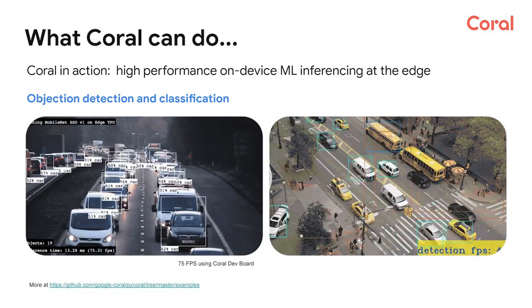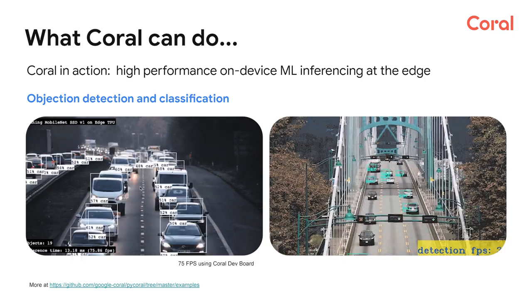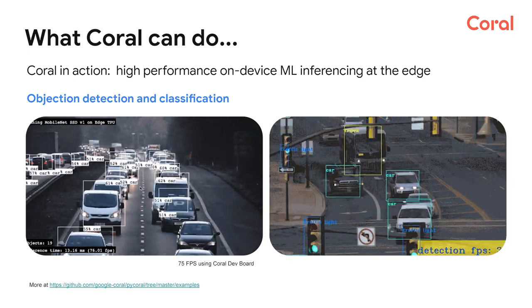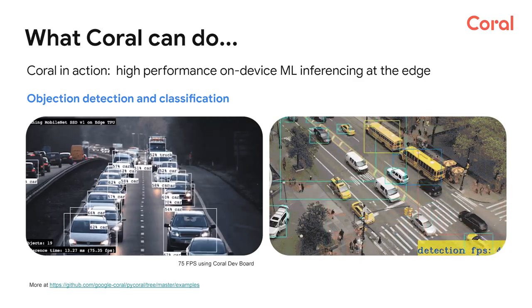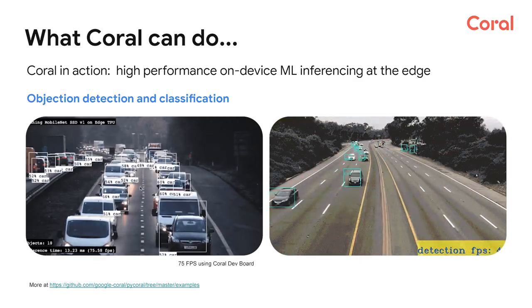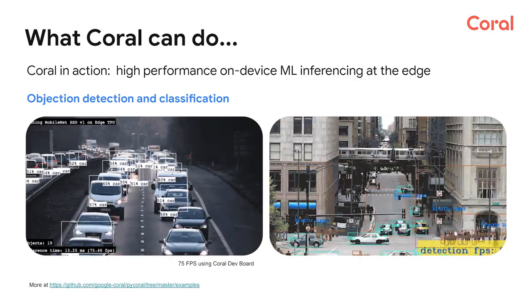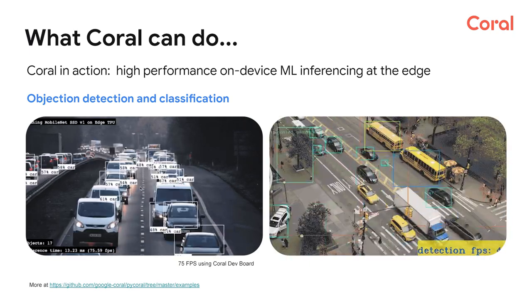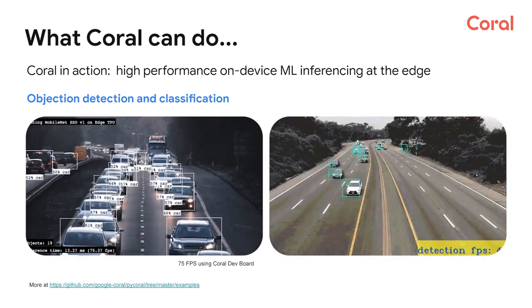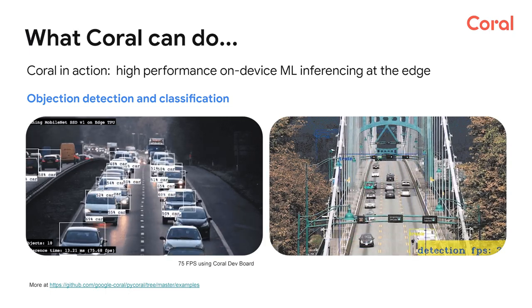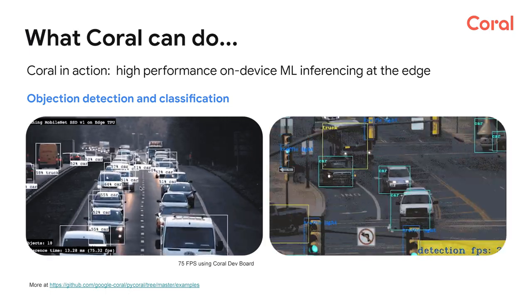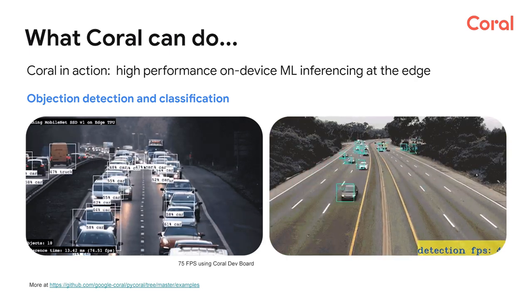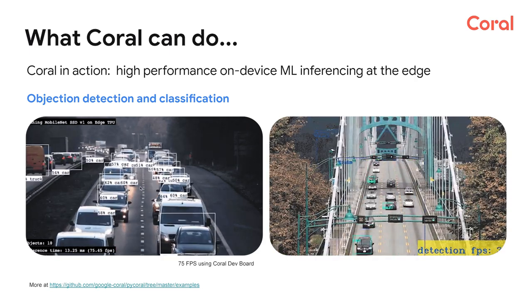Here's another example of machine learning inferencing acceleration by Coral. In addition to object detection, the machine learning model here is also performing object classification. Notice that different objects such as cars, buses, traffic lights, and pedestrians are being identified at a very high frame rate on a live video. This again demonstrates the high performance power of on-device AI that Coral hardware is able to deliver.